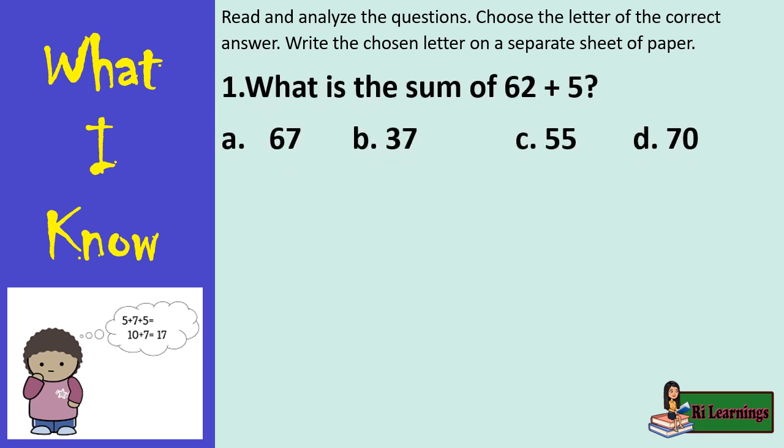1. What is the sum of 62 plus 5? A. 67, B. 37, C. 55, D. 70.